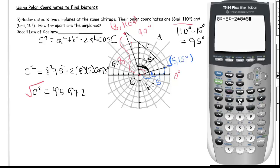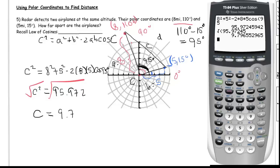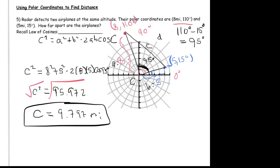Taking the square root, we get the distance: √95.972 ≈ 9.797 miles. So the two airplanes are 9.797 miles apart. All of this without having to use the Pythagorean theorem or the distance formula. In rectangular form you'd need the distance formula, but in polar form we can use the law of cosines instead.